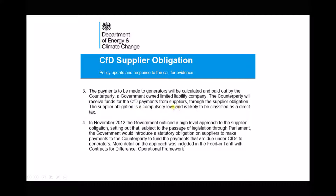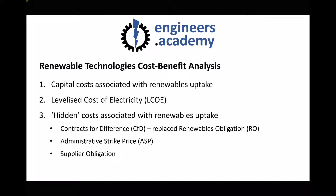The supplier obligation is a compulsory levy, likely classified as a direct tax. The government introduces a statutory obligation on suppliers to make payments to the counterparty to fund CFD payments due to generators. The last piece in the puzzle is how suppliers get that money: unfortunately they increase the bills of customers and consumers. The hidden costs are ultimately borne by individuals using the electricity. The cost of electricity has been steadily increasing not because the wholesale price is rising drastically, but because that additional income funds renewables projects.